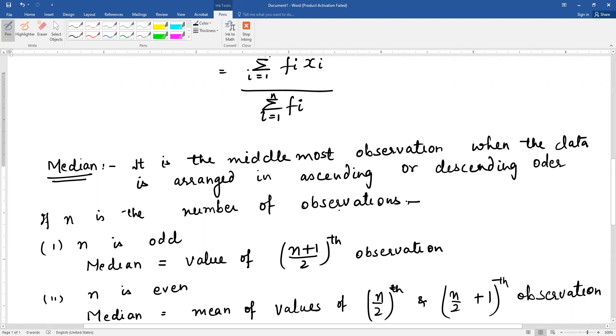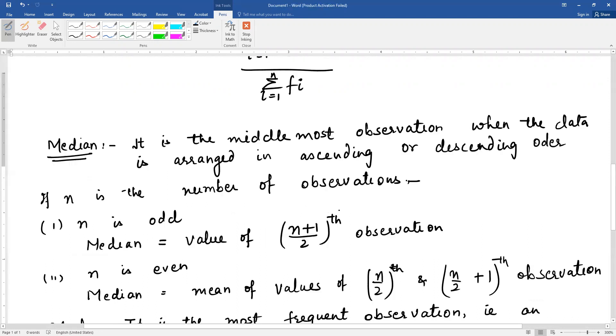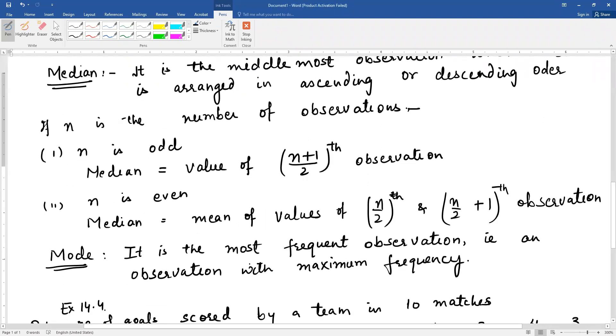Now n is the number of observations. If there are n observations, then two things can happen: either n is odd or n is even. If n is odd, then median will be the value of the (n+1)/2th observation. Suppose n is 5, then what will it be? 5 plus 1, that is 6, divided by 2, that is the third observation.